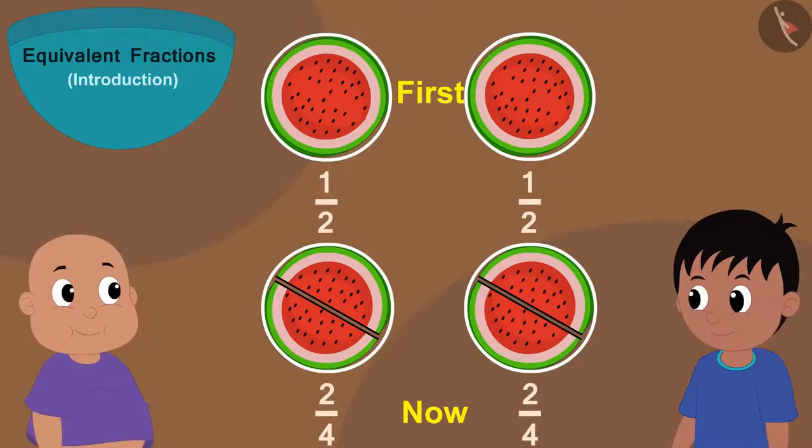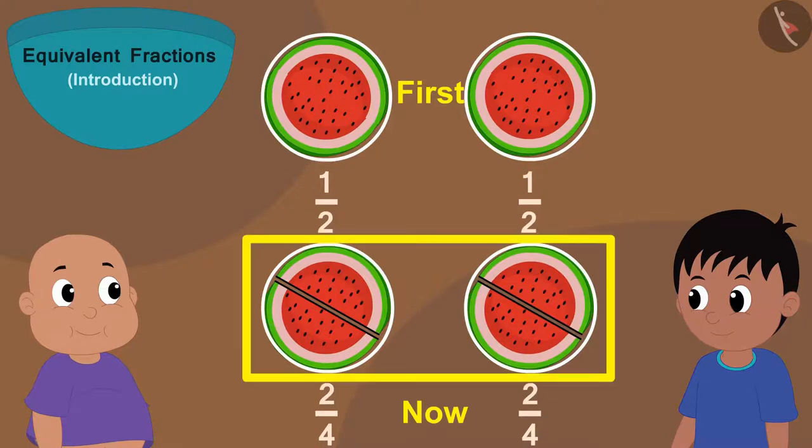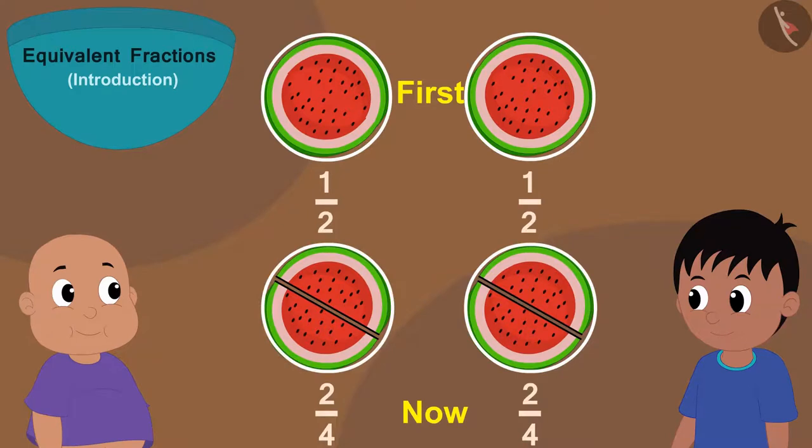Both are getting as much watermelon as before. Earlier, Raju and Bablu were getting one part out of two. That is, one by two parts. And now, they are getting two parts out of four. That is, two by four parts.